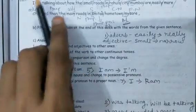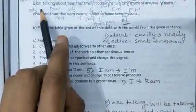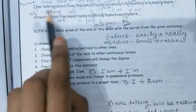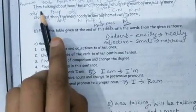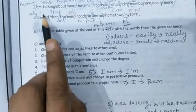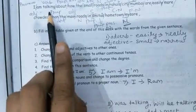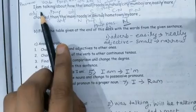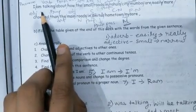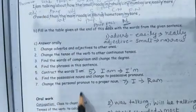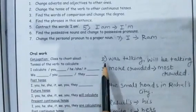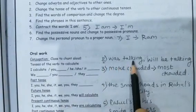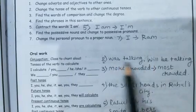For Question 2, you have to check which tense the verb is in. The verb given is 'am talking'. 'Am talking' means it is present continuous tense. So present continuous tense is already given, and you have to change it to past continuous and future continuous — you have to change it to other tenses.